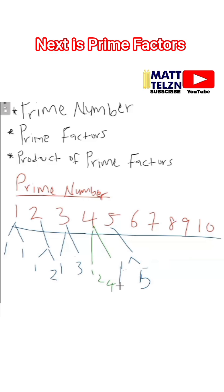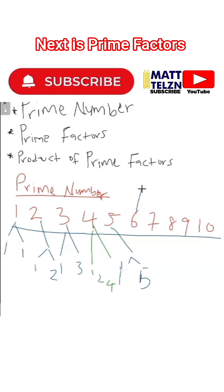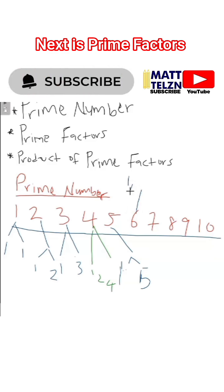Now looking at six here, what are the factors of six? We have one, we have two, we have three, and we have six.